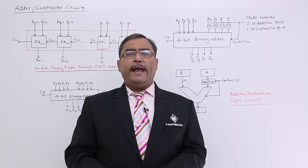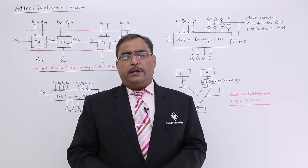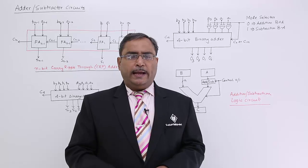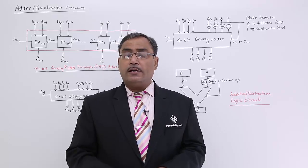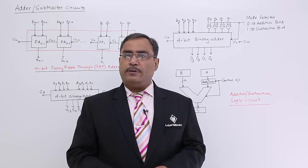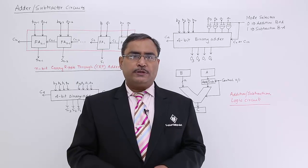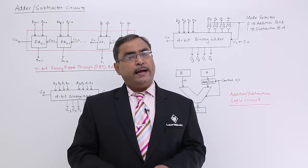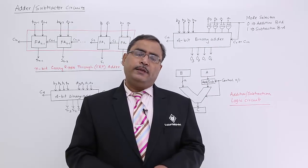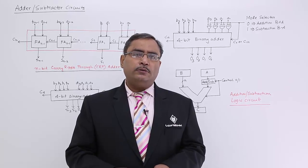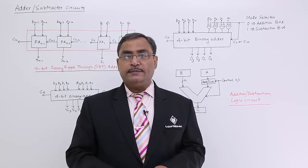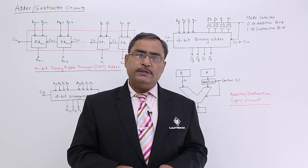In this session, we are going to discuss carry ripple adder, also called carry ripple through adder. So how does this adder actually work? In your digital classes, you have learned the half adder and full adder. In case of half adder, we had two bits to get added with two outputs: carry and sum. In case of full adder, we had three bits to get added with two outputs: carry and sum. Now, we are going for two numbers getting added, each having multiple bits. So how to get it done through adder circuits?